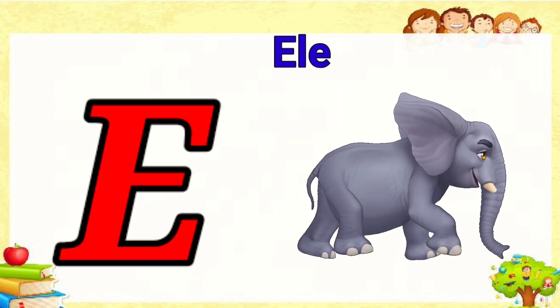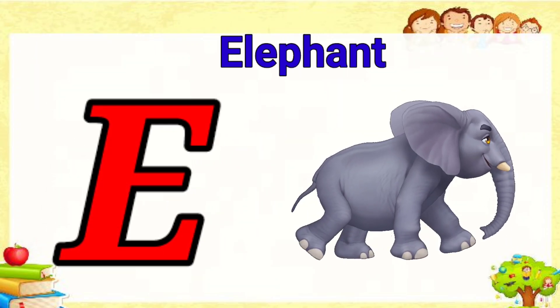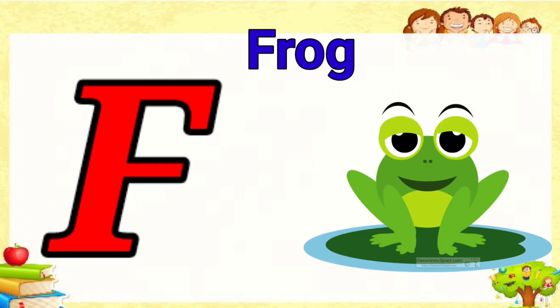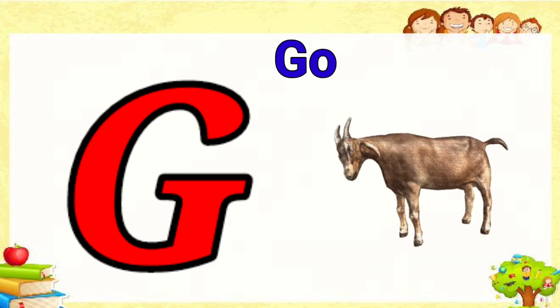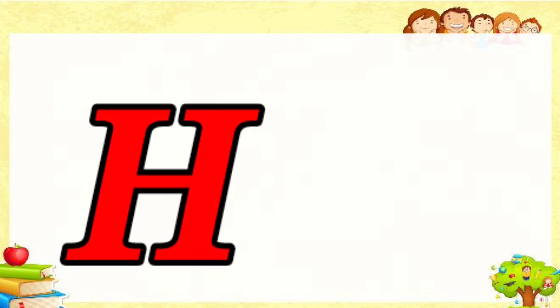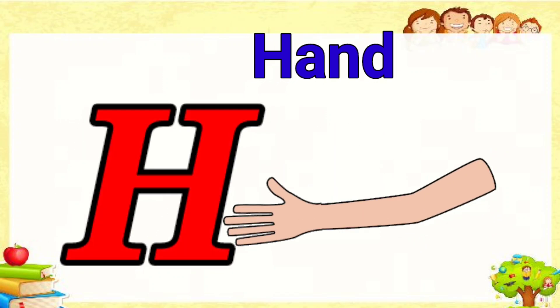E is for elephant, e-e-elephant. F is for frog, f-f-frog. G is for goat, g-g-goat. H is for hand, h-h-hand.